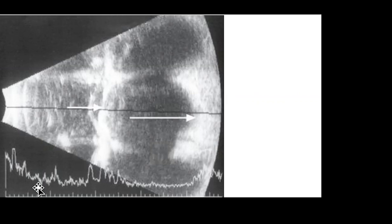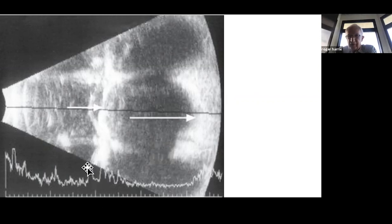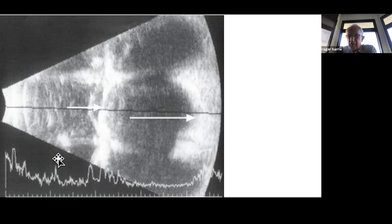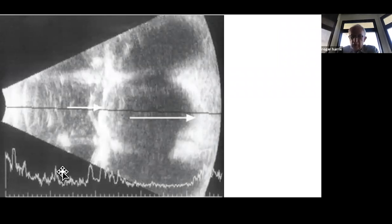For tumor diagnosis, the vector A-scan gives a rough idea of surface and internal reflectivity — high or low. However, the real diagnostic criteria established by Dr. Ossoinig require a true freestanding A-scan. If budget allows, a separate diagnostic A-scan with its own B-scan and high-frequency probe is always recommended over relying solely on the vector A-scan.